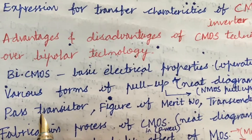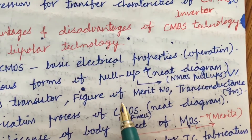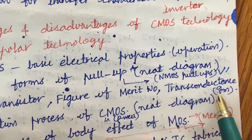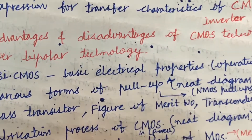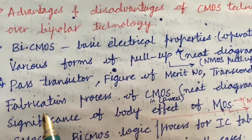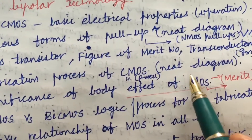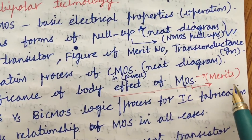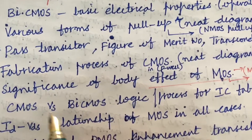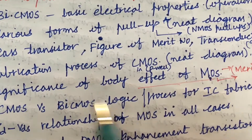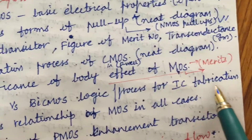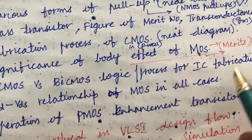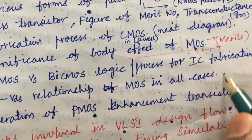Define terms like pass transistor and figure of merit, as well as transconductance — explaining these terms is also one expected question. Explain the fabrication process of CMOS with a neat diagram, the significance of body effect of MOS and its merits, CMOS versus BiCMOS logic differences, the process for IC fabrication, and the ID versus VDS relationship of MOS in all cases are also very very important questions.